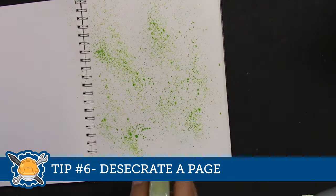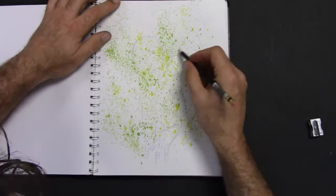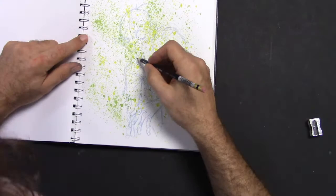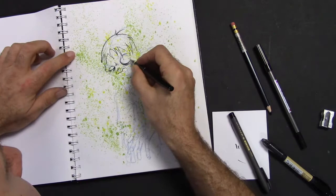Tip number six, desecrate a page. So you start off with this nice white drawing. It's untouched. You're a little worried about what do I draw? What do I put on there? Well, don't worry about that. Don't worry about the drawing portion. Just dirty it up a little bit. I took a little spray bottle with some ink. I sprayed it on there. And so that kind of, it's already, it put me in a frame of mind. Well, I don't have to be too concerned with ruining this page because in a way it's already ruined. All I can do is help.